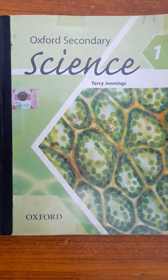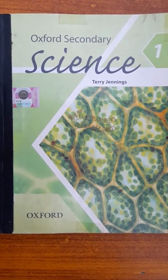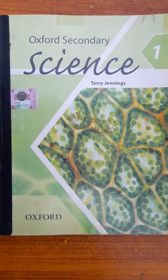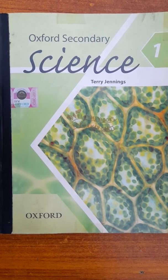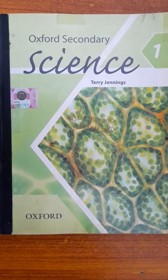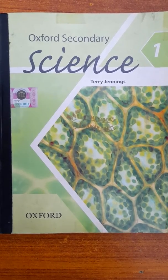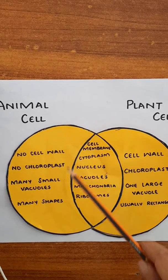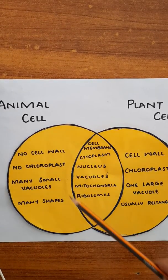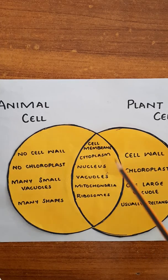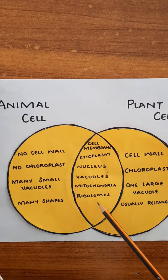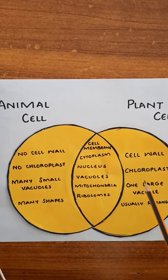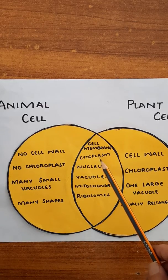In today's topic I am going to discuss the different organelles of the cell — meaning the parts of the cell along with their functions — and also the similarities and differences between animal and plant cells with the help of a Venn diagram. The Venn diagram includes two circles; where the circles overlap each other, this will show the similarities, while the outer portions will show the differences.